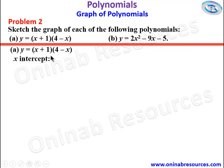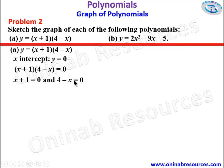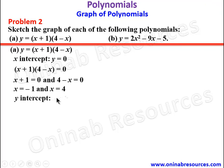Here we apply the intercept method. For x-intercept, y is equal to 0, so we equate x plus 1 into 4 minus x to 0. This gives x plus 1 equal to 0 and 4 minus x equal to 0, so x is equal to negative 1 and x is equal to 4. For y-intercept, x is equal to 0, so y equals 0 plus 1 into 4 minus 0, which gives 1 times 4, so y is equal to 4.